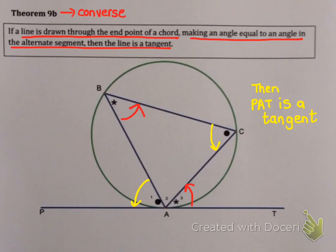So the exact opposite of 9a. So if you are given that those angles are equal, or that those angles are equal, then P-A-T would be a tangent. So this is the second way to prove something is a tangent. The first way was in 7b. If you could prove that a line is perpendicular to the radius then it's a tangent.